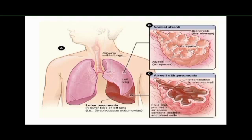Here you can see the normal alveoli and the alveoli infected with pneumonia lesions. In the alveoli infected with pneumonia, fluid and pus cells are filled within the airspace of the alveoli. In normal alveoli the airspace is totally empty. This inflammation fills the alveoli with fluid, making it difficult for the body to get the oxygen it needs.